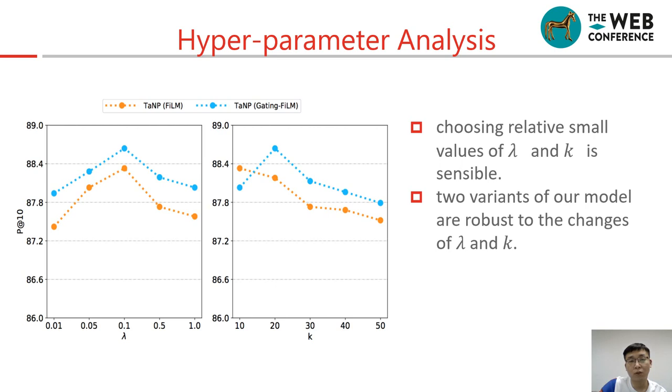We also conduct hyperparameter analysis. From it, we can draw the following conclusions: Choosing relatively small values of lambda and k is sensible. Two variants of our models are robust to the changes of lambda and k.